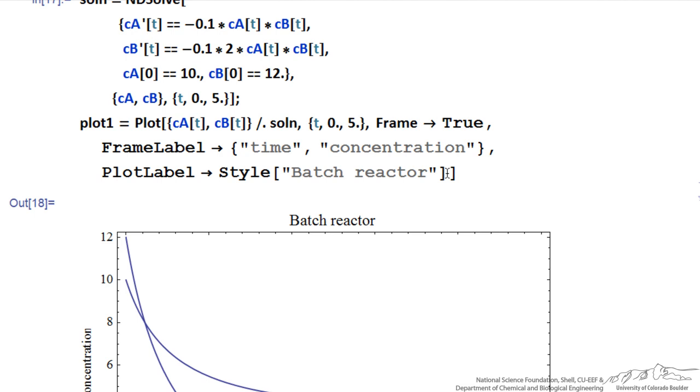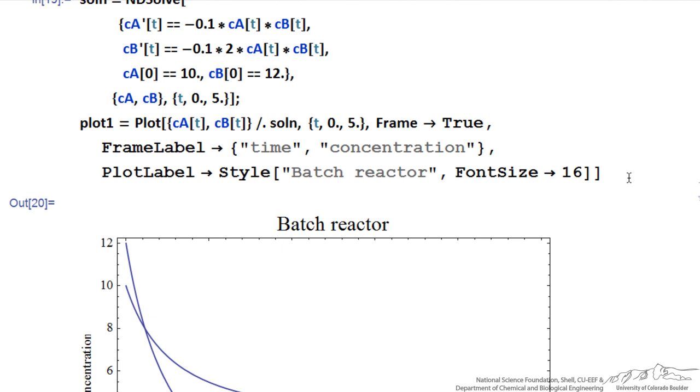If I like to have a larger font within this plot label style, I can again put a comma and indicate the font size, again the arrow, and let's try 16. Hit shift enter, and we have a bigger font.